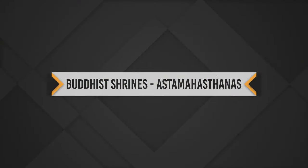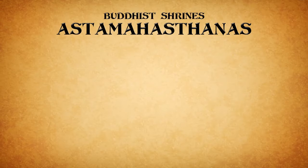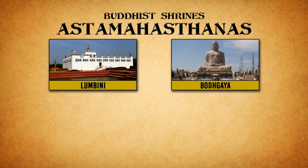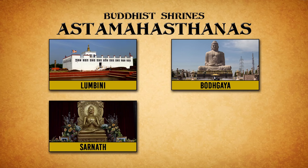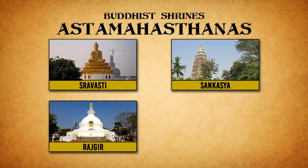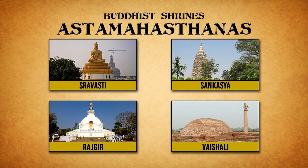Buddhist Shrines — Asta Mahasthanas: There are eight great holy places as follows. 1. Lumbini — birth of Buddha. 2. Bodhgaya — enlightenment of Buddha. 3. Sarnath — the first sermon or Dhamma Chakra Parivartan. 4. Kushinagar — death or Mahaparinirvana. Along with them, Shravasti, Sankashya, Rajgir and Vaishali are known as Asta Mahasthanas.